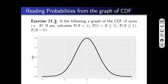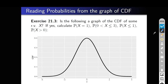Example 21.3: given another function graph, we ask if it is a CDF. This is NOT a CDF because any CDF must tend to 1 when x tends to plus infinity. The given function tends to only about 0.4 at plus infinity, not 1. So this is not a CDF of any random variable.